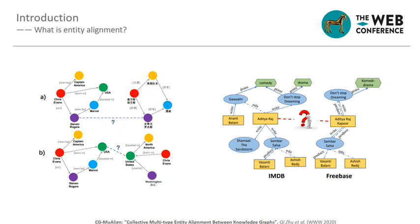The first thing we should know is what is entity alignment. Entity alignment is an emerging subtask of knowledge graphs. It aims to identify equivalent entity pairs from different knowledge graphs, which is essential in integrating multi-source knowledge graphs.